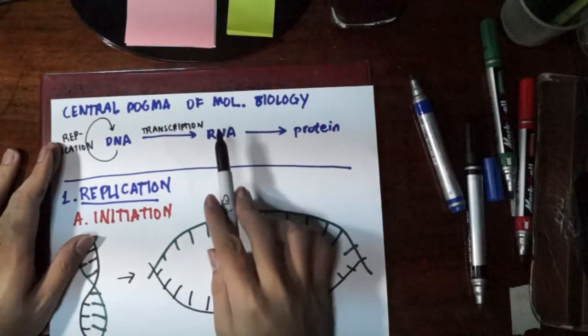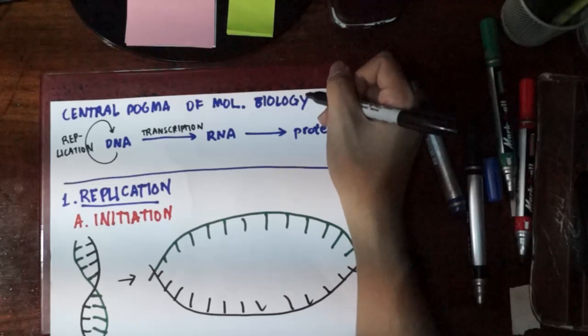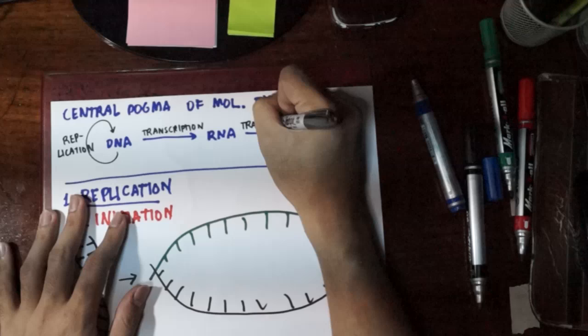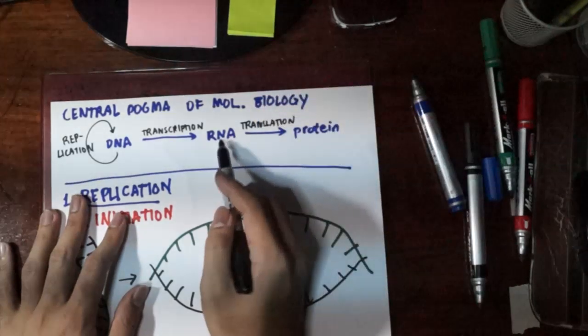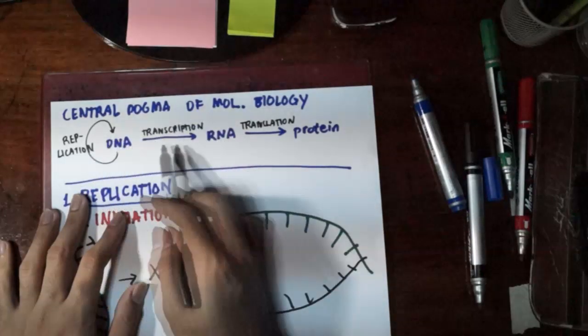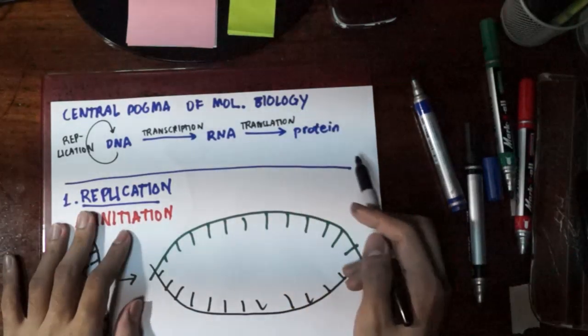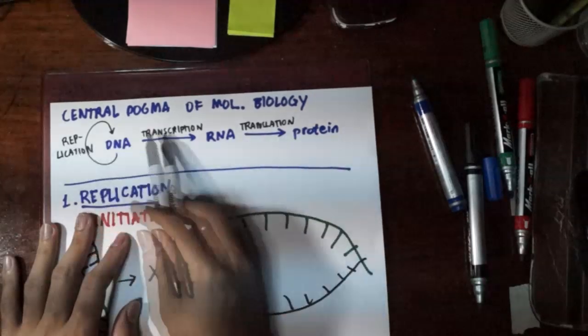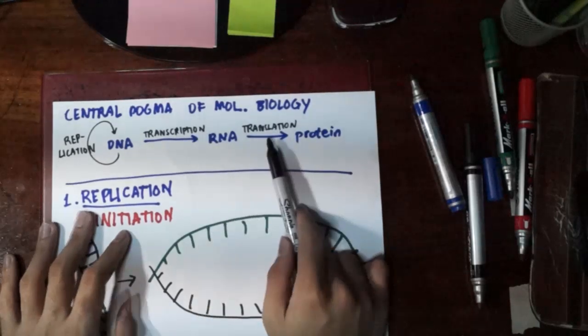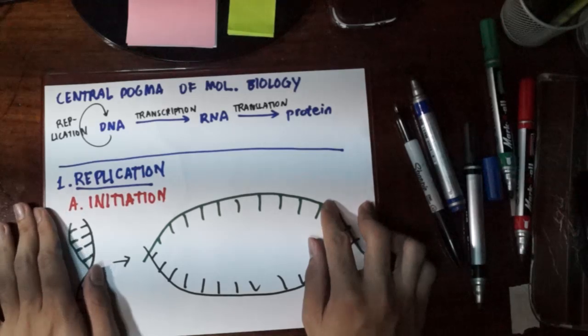And then finally, the process of RNA going to the ribosome to finally make proteins is known as protein synthesis, but another name for that is translation. Because now you're going to translate it from the language of nucleic acids, of nucleotides, of nitrogenous bases, to the language of proteins which are amino acids and peptide bonds. So you have three processes in the central dogma of molecular biology: replication, transcription, and translation. And so in the next video, we will start with replication.